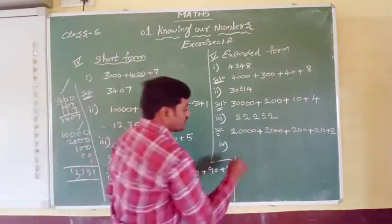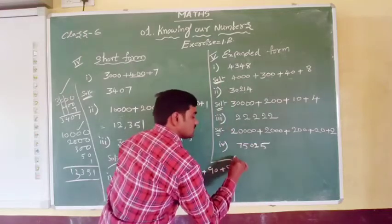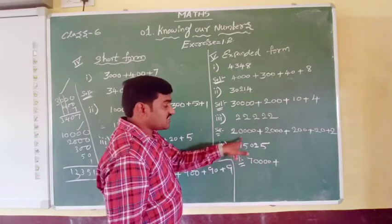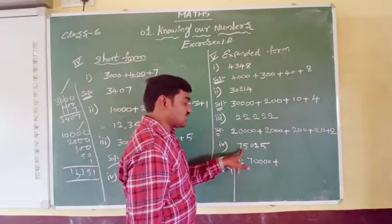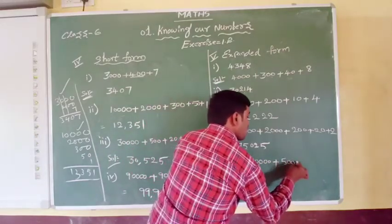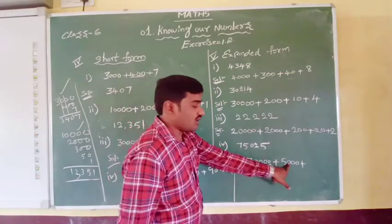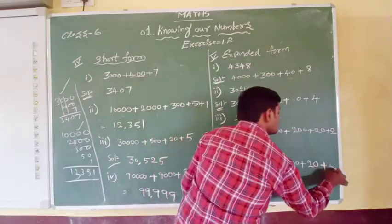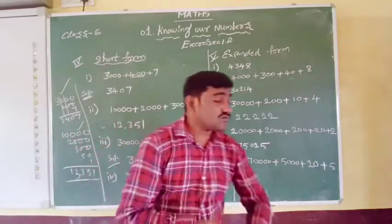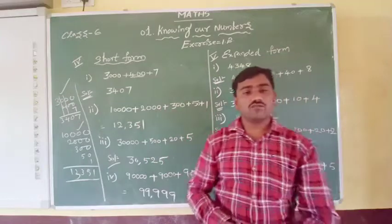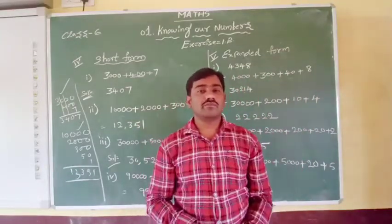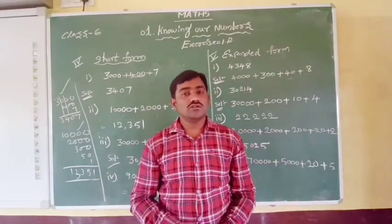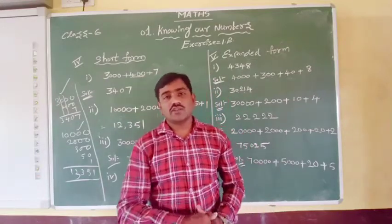For 75,025: 7 is in the ten-thousands place = 70,000. 5 is in the thousands place = 5,000. 0 in hundreds — no hundreds term. 2 is in the tens place = 20. And 5 in the ones place = 5. So: 70,000 + 5,000 + 20 + 5. In this way we can complete short form and expanded form. Practice these kinds of questions from your textbook or internet sources. If you have any doubts, ask me in the comment box. Thank you for watching. Bye.